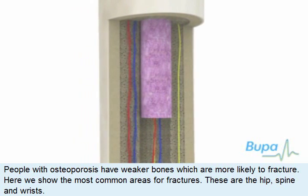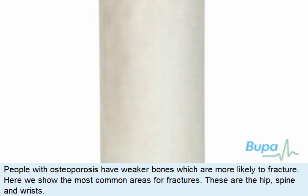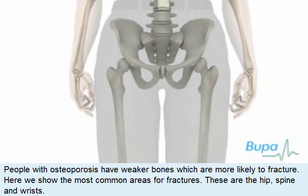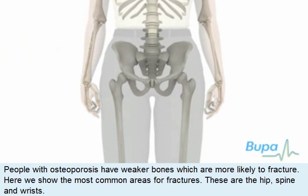People with osteoporosis have weaker bones that are more likely to fracture. Here we show the most common areas for fractures. These are the hip, spine and wrists.